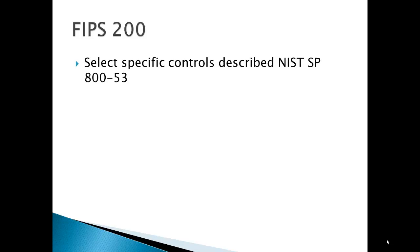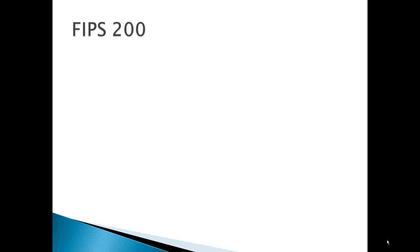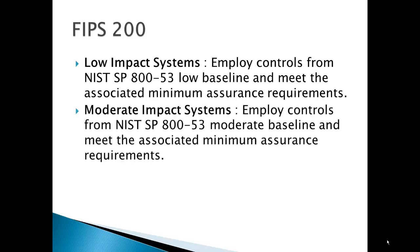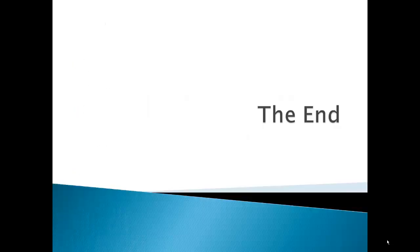In FIPS 200, you select specific controls as described in NIST Special Publication 800-53. Adequate security is required and this is a complex process overall — FIPS 199 categorization is just the first step, just a small brick in the overall wall of risk assessment, risk control, and risk management. For low impact systems, employ controls from NIST SP 800-53 low baseline and meet the minimum assurance requirements. For moderate impact systems, use the moderate baseline. For high impact systems, employ controls from the high baseline and meet those minimum impact requirements.